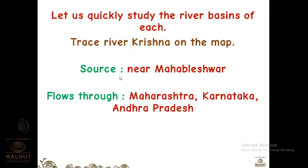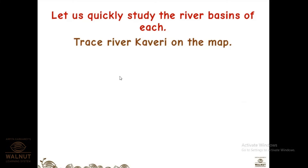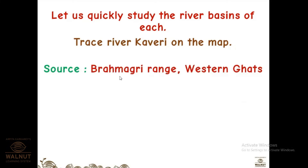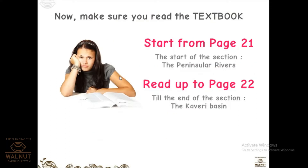River Krishna flows through Maharashtra, Karnataka, and Andhra Pradesh. Total length is 1400 kilometers — compared to Godavari's 1500 kilometers. River Kaveri — source is Brahmagiri Range in the Western Ghats — flows through Karnataka, Kerala, and Tamil Nadu. Total length is 760 kilometers.